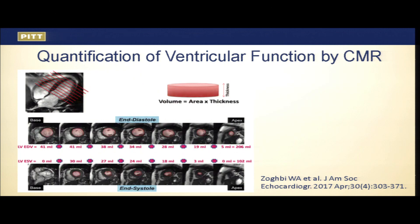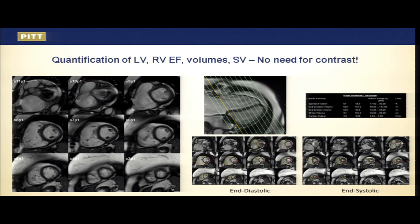Quantification of ventricular function is something MRI is considered the gold standard for. If we know the area and the slice thickness, we have volume; from end-diastolic and end-systolic volumes, we can quantitate ventricular function and stroke volume. This is particularly helpful for the right ventricle, as seen in this patient with prior mitral valve replacement who presents with right-sided symptoms, tricuspid valve regurgitation, incomplete coaptation, and RV dilation.